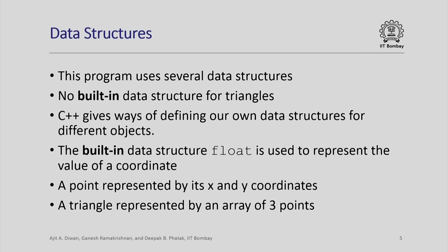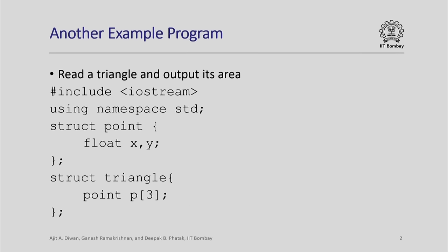A triangle is nothing but a set of 3 points in the plane, and a point in the plane can be represented by its x and y coordinates. The coordinates themselves can be represented by a built-in data structure called a float, which is used to represent real numbers. We have declared a structure called point which stores 2 floating point values. This will be used to represent a point in the plane, and a triangle is a set of 3 such points. We are declaring a type called triangle which stores an array with 3 points.